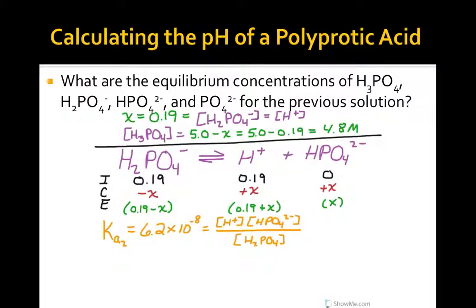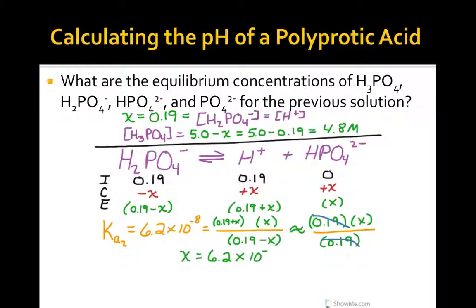In orange here, we see the equilibrium expression for the second dissociation using the given Ka2 value. We substitute, we approximate, and we can solve for x, which is 6.2 times 10 to the negative eighth molar. This gives us the hydrogen phosphate concentration at equilibrium.